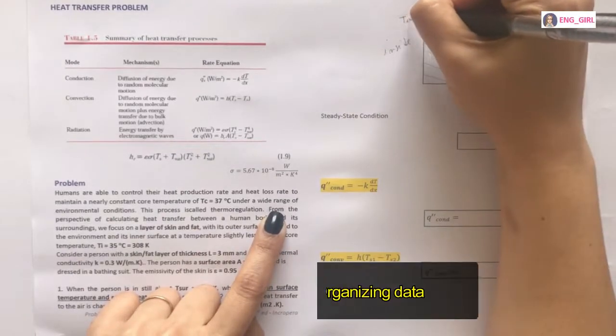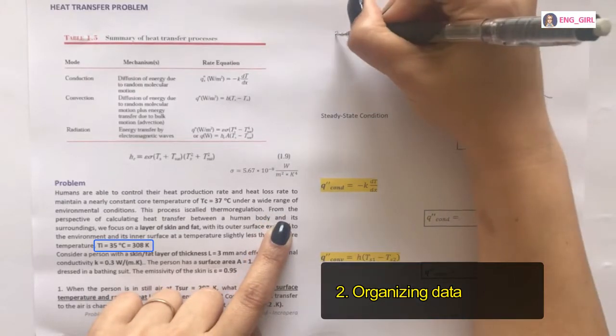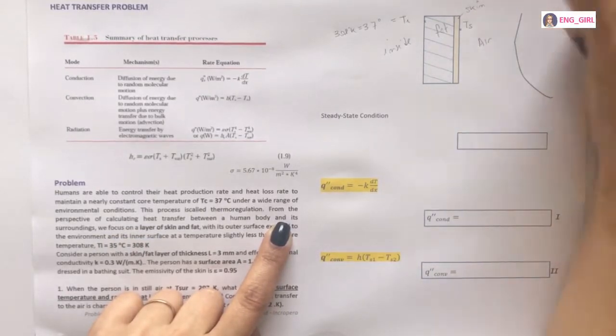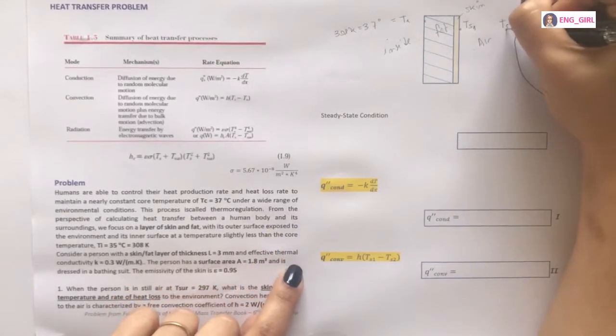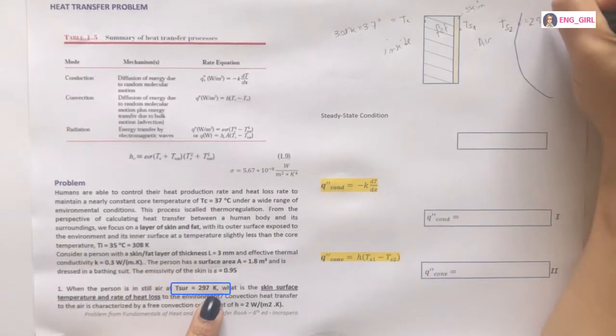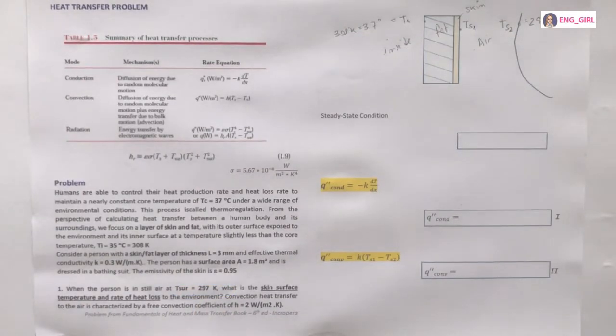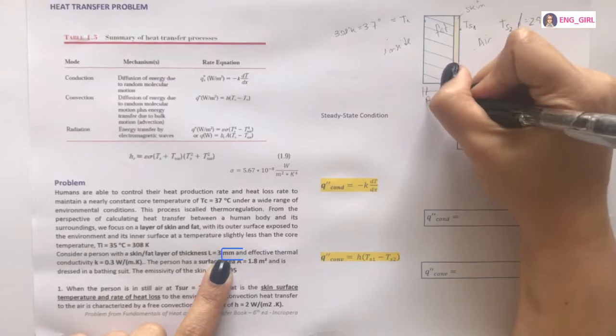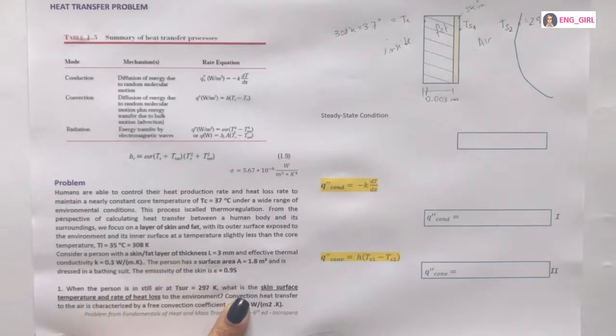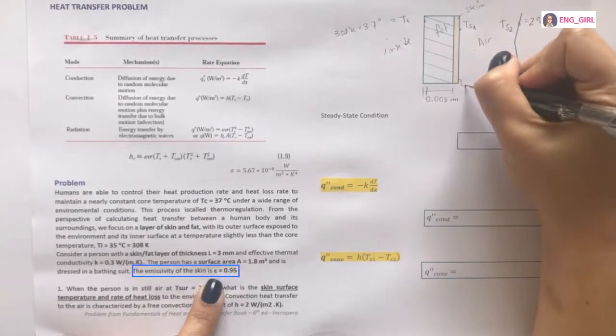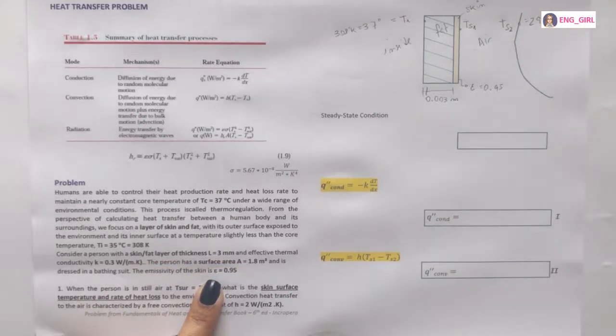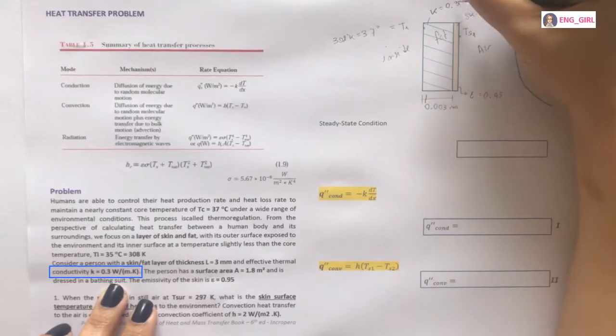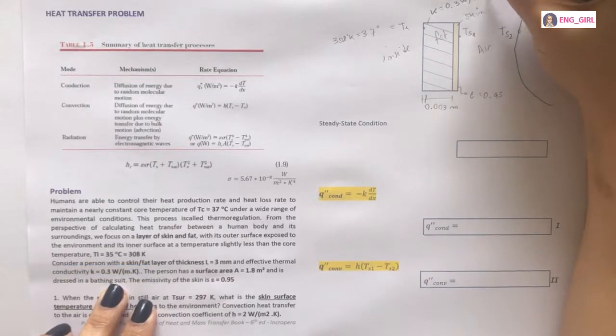So, the inside temperature is 37 degrees or 308 Kelvin. The temperature of surface, we have to find, and the temperature of surface 2 is 297 Kelvin. Another important data, the thickness of fat is 3 millimeters or 0.003 meters. And the emissivity of skin is 0.95. The thermal conductivity of fat is 0.3 watts divided by meters Kelvin.